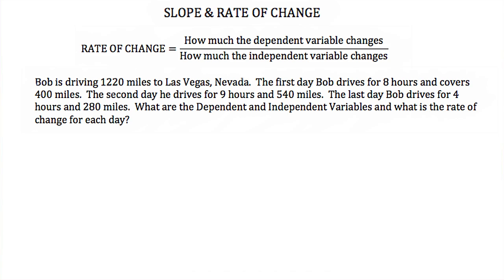Let's look at this example. Bob is driving 1,220 miles to Las Vegas, Nevada. The first day Bob drives for 8 hours and covers 400 miles. The second day he drives for 9 hours and 540 miles. The last day Bob drives for 4 hours and 280 miles. What are the dependent and independent variables, and what is the rate of change for each day?